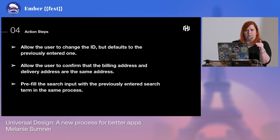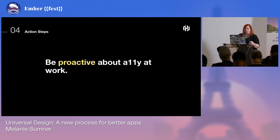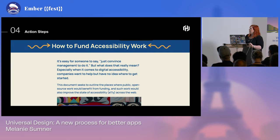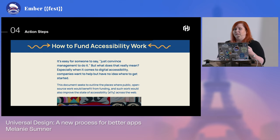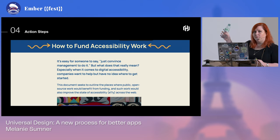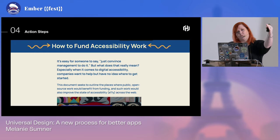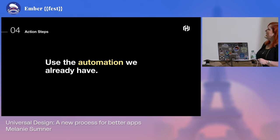Number six: be proactive about accessibility at work. I've made a website to help — pleasefunda11y.com — on how to fund accessibility work. A lot of people say 'we'd like to, but how?' This site gives you a list of rationalizations, what to fund, and how your business benefits. Use it to make the case until someone puts money into accessibility work.